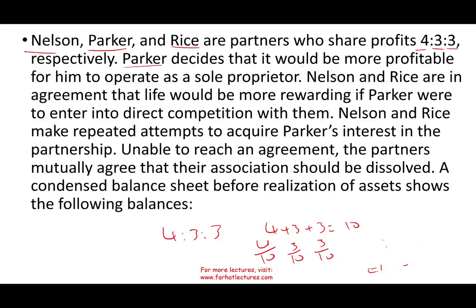Parker decided it would be more profitable for him to operate as a sole proprietor, so Parker wants to leave. Nelson and Rice are in agreement that life would be more rewarding if Parker were to enter into direct competition with them — the other two partners said it's okay for him to leave. Nelson and Rice made repeated attempts to buy Parker's interest but were unable to reach an agreement. The partners mutually agreed that their association should be dissolved, so they are going to liquidate the partnership.